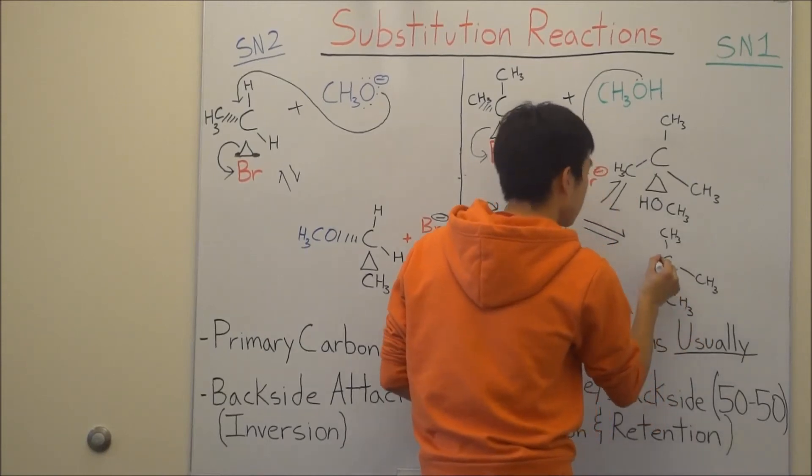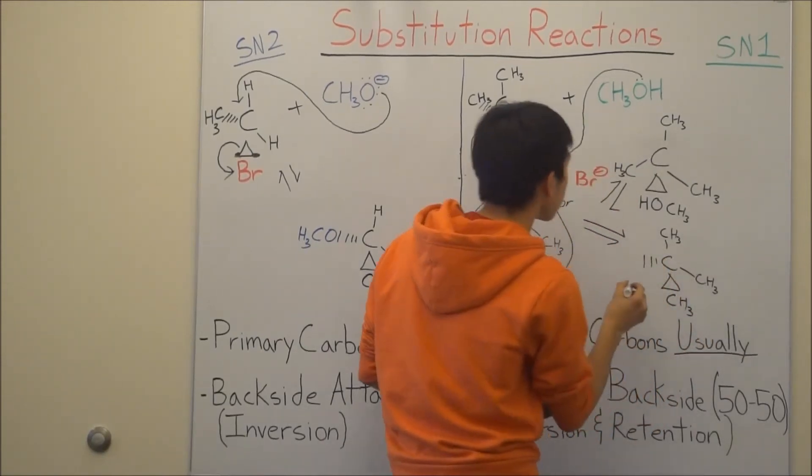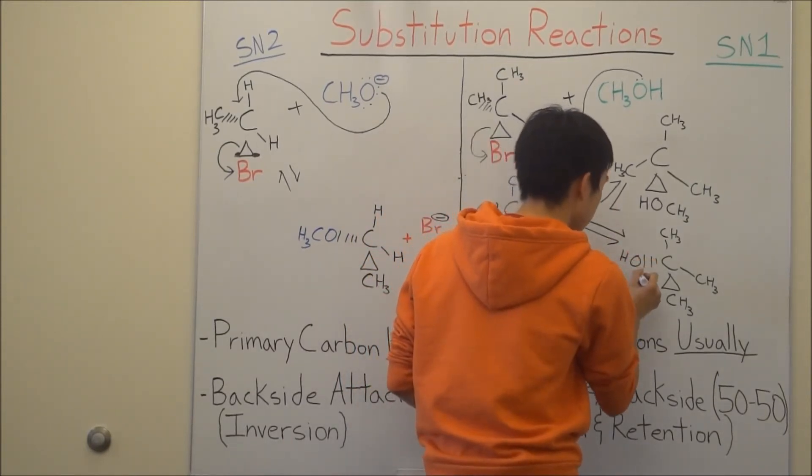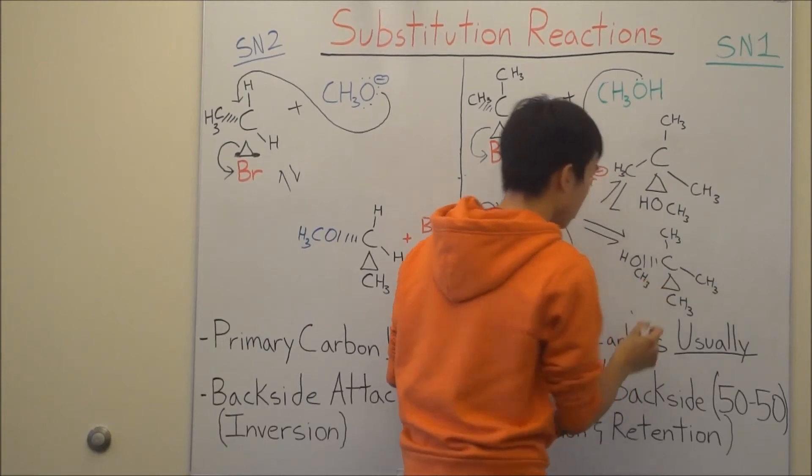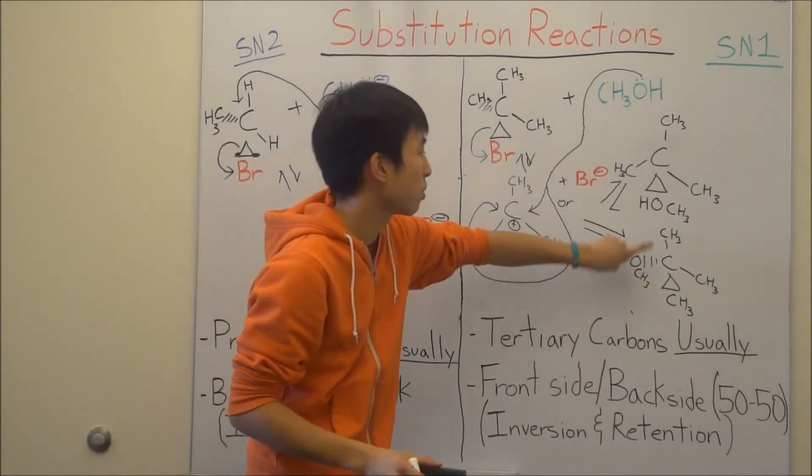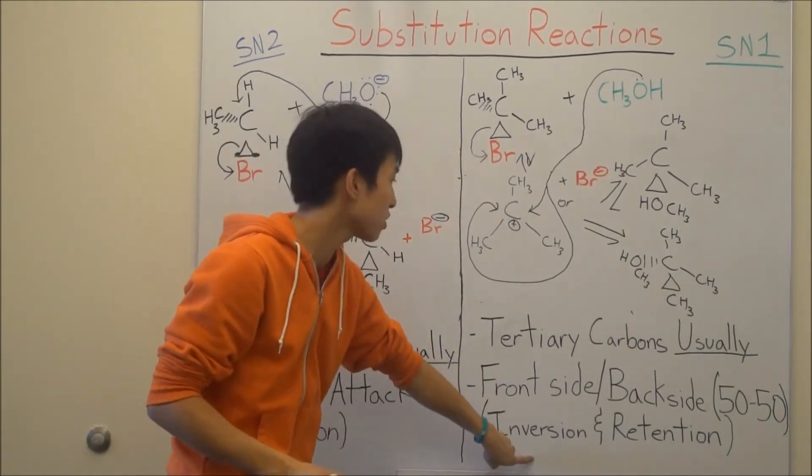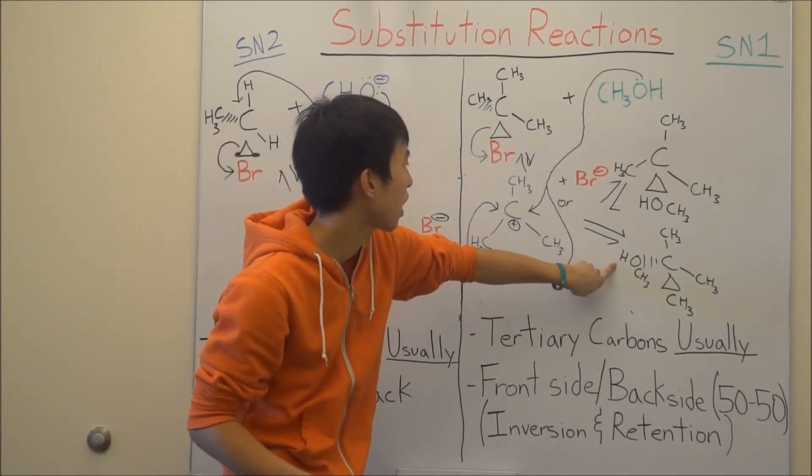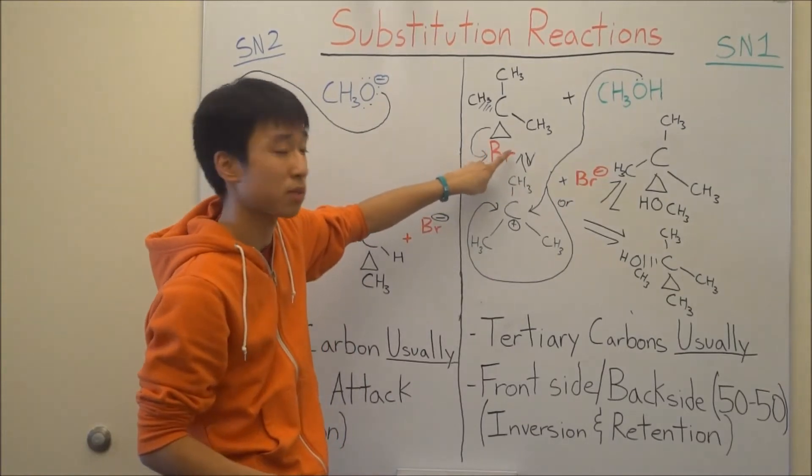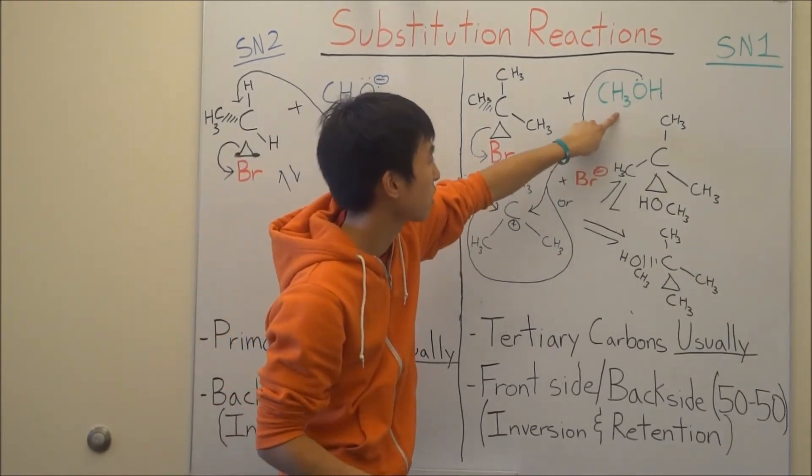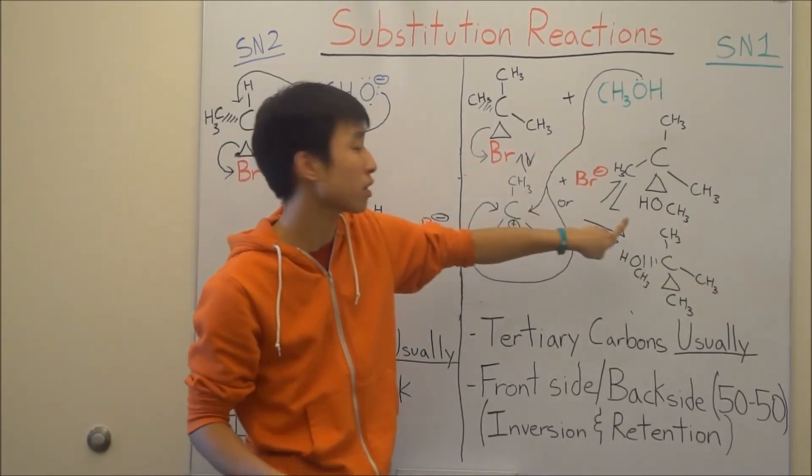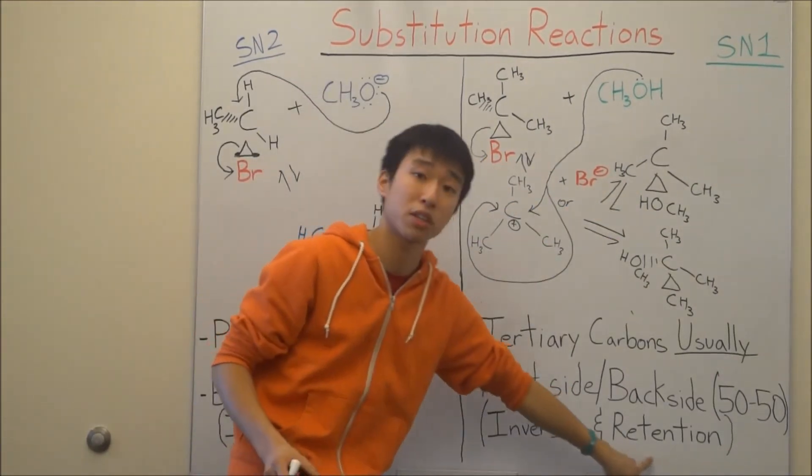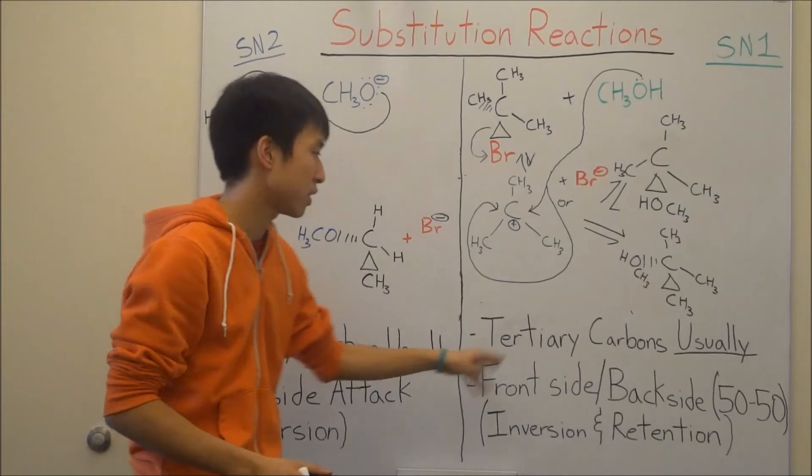Alright, I'm almost done. Just keep looking at the back of my head for a couple more seconds. Hold on. I lied. More than a couple more seconds. But, alright, yeah. This is your two products. You're going to get inversion, where your methanol ends up in the back, opposite, being dashed, opposite where the bromine was before. Or your methanol is going to end up attacking the front, being wedged like before, meaning retention.